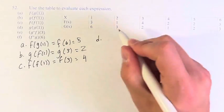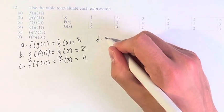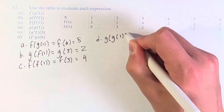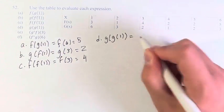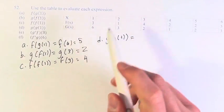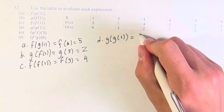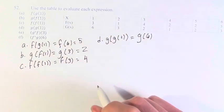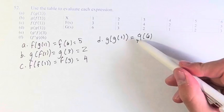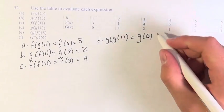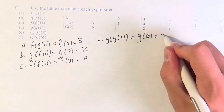For part d, we have g of g of 1. g of 1 is 6, so this is g of 6. And we can find g of 6 itself by going down and seeing that it's equal to 3.